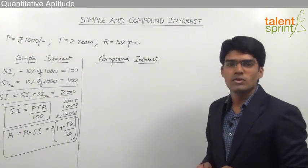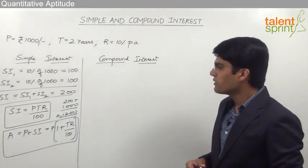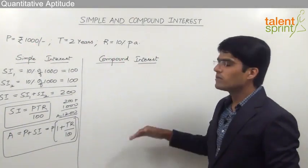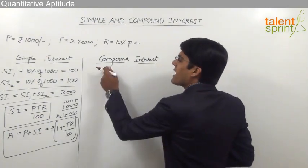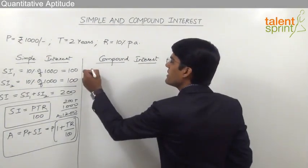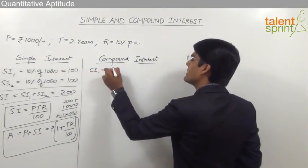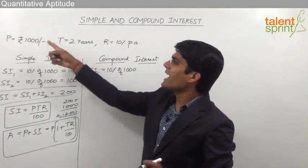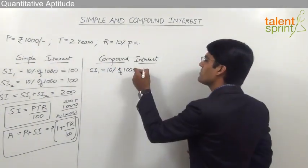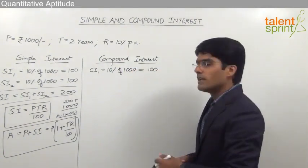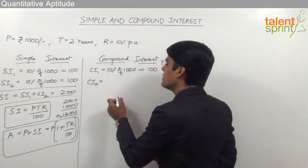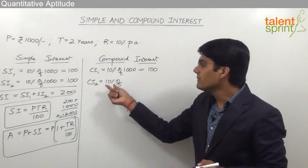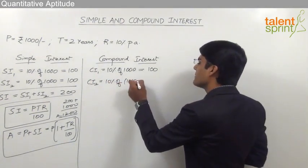Let us now calculate compound interest using the same values — 1000 rupees for 2 years at 10% per annum. The compound interest for the first year is 10% of 1000 rupees, which equals 100 rupees. For the second year, it will not be 10% of 1000 rupees — instead, it will be 10% of 1000 + 100 = 1100 rupees.